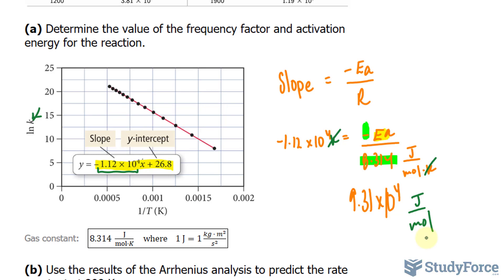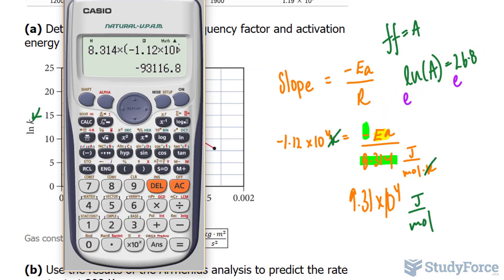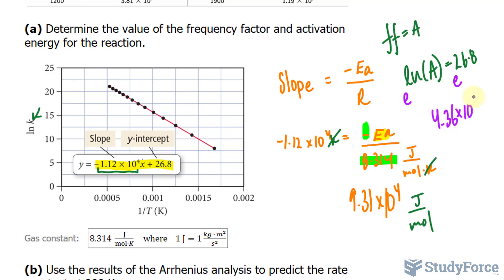Now to calculate the frequency factor, we use the y-intercept, and we make it equal to ln of A. So we'll call the frequency factor A, and I'll set ln of the frequency factor is equal to the y-intercept, 26.8. All we have to do is solve for A, and we can do that by raising both sides as bases to e. So we have Euler's number e, 26.8, and that gives us the frequency factor of 4.3 to three significant figures. It would be 4.36 times 10 to the power of 11. Let me write that down. 4.36 times 10 to the power of 11. And the units would be the exact same as the constant, which is one over moles times seconds.